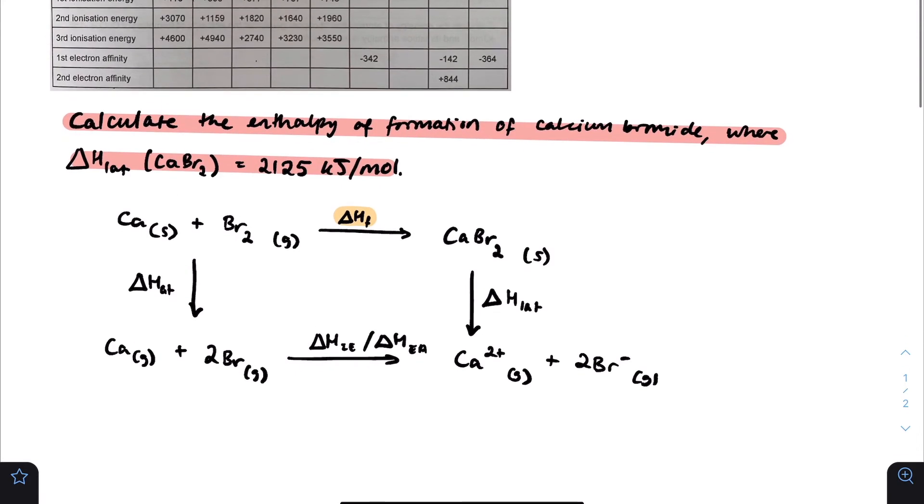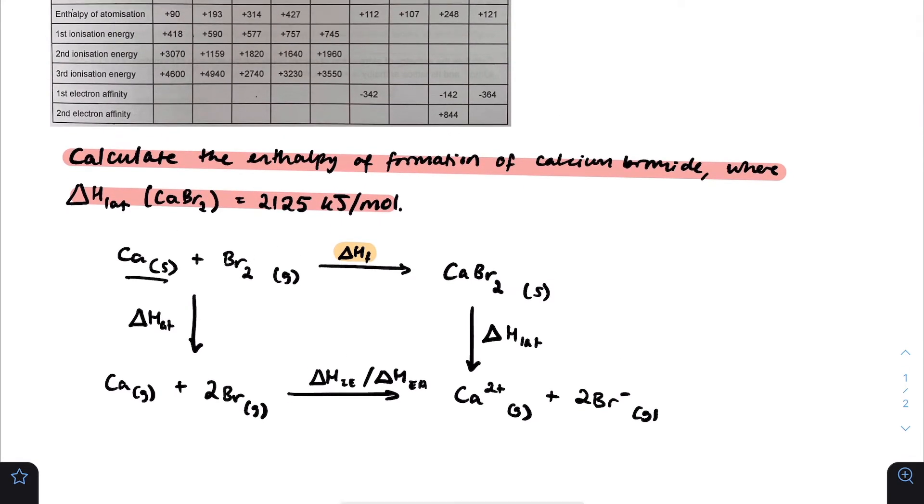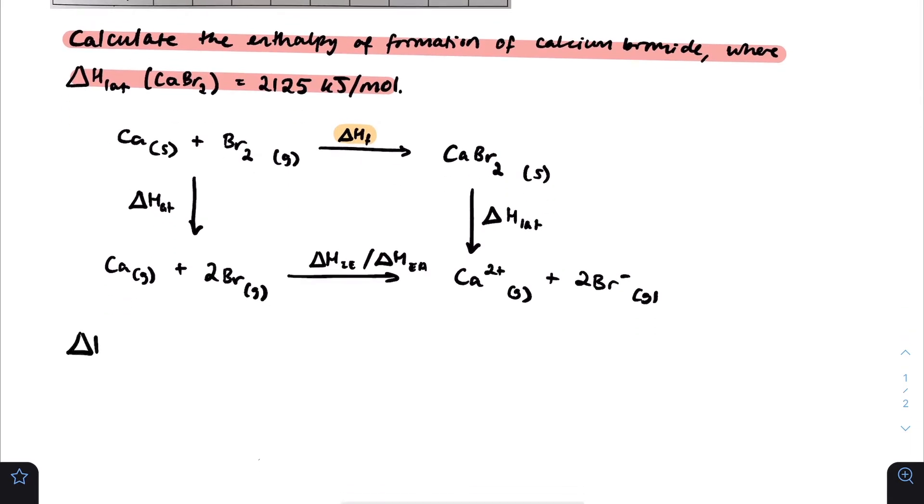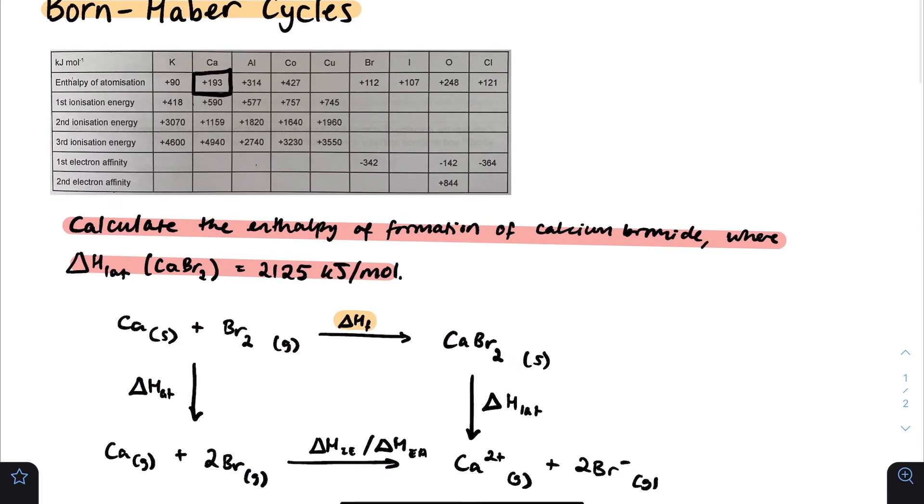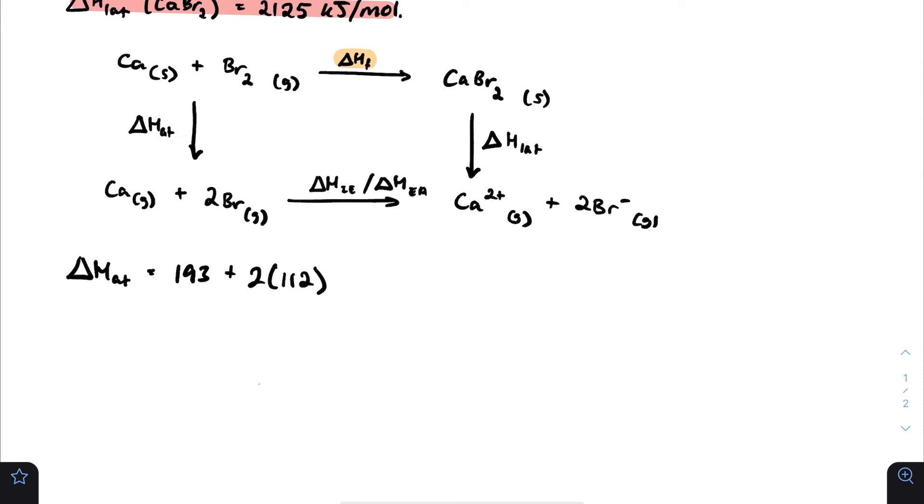Let's start with the atomization. You go from Ca solid to Ca gas. Looking at this table, the enthalpy of atomization is plus 193. We have to do this for Br, but considering there are two Br atoms we have to make, we multiply by two. Br is 112, so it's 2 times 112. If we calculate this, 193 plus 2 times 112 gives us 417. Delta H_at equals 417 kJ per mole.